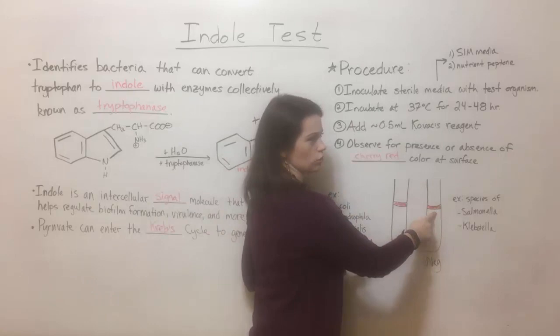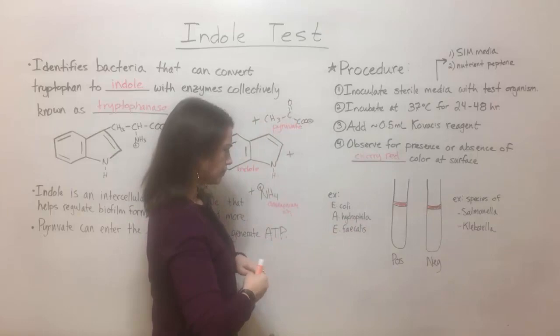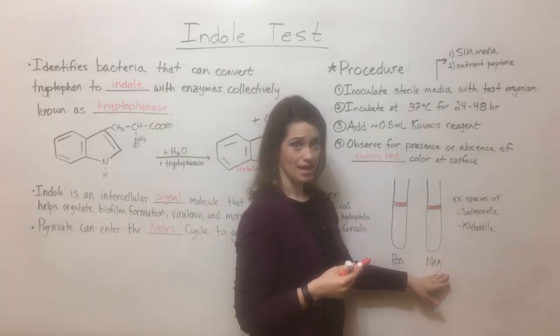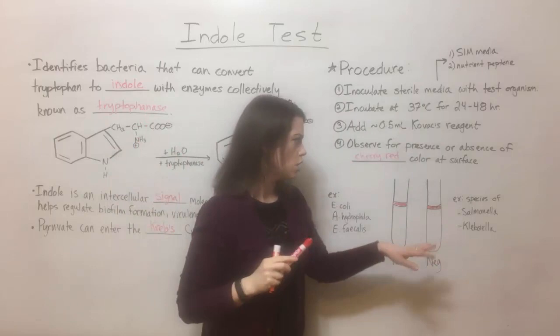Some examples of indole positive bacteria include E. coli and Aeromonas hydrophila. Species that would be indole negative — meaning they don't have the tryptophanase enzyme, so they cannot convert tryptophan to indole — would be species of Salmonella and Klebsiella, just as examples.